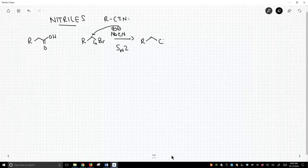Cyanide is great at SN2 reactions. It's fantastic. And then we get an acid derivative.